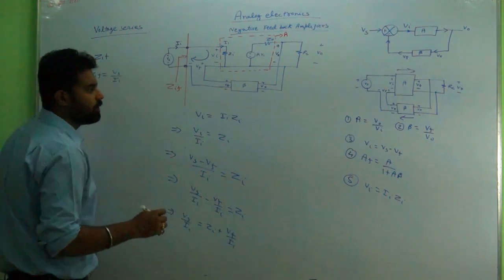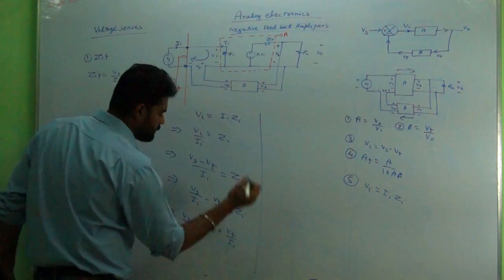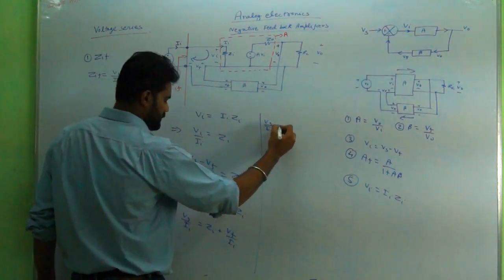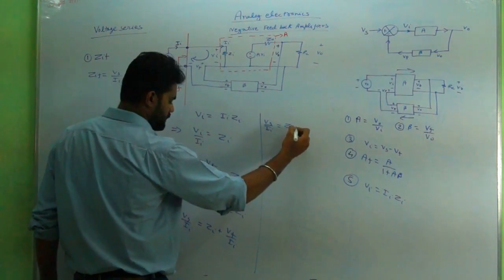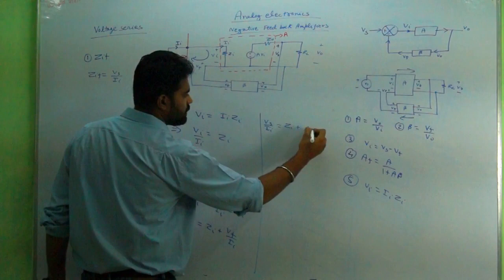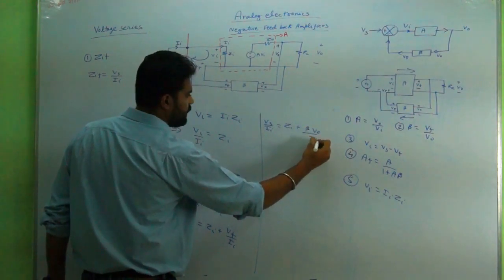Now Vf can be written as - I will write it here - Vs/Ii = Zi + Vf can be written as βVo/Ii.